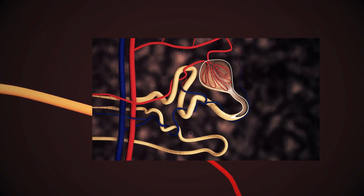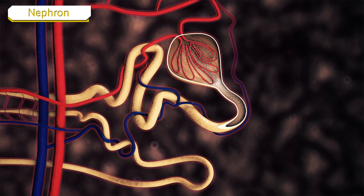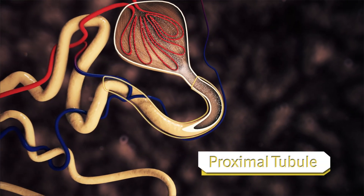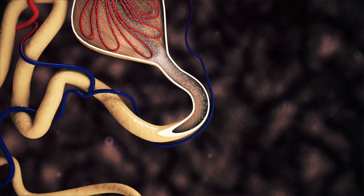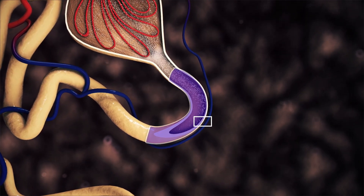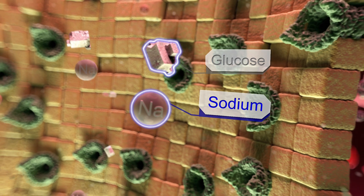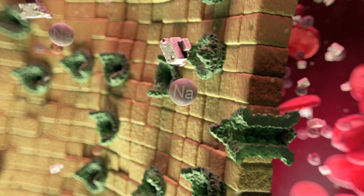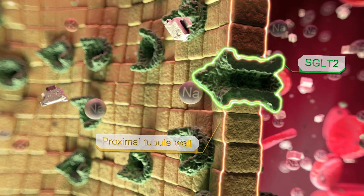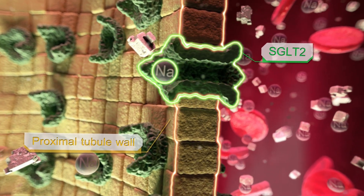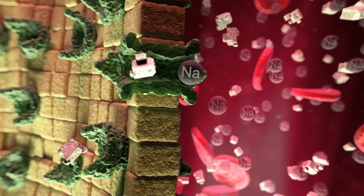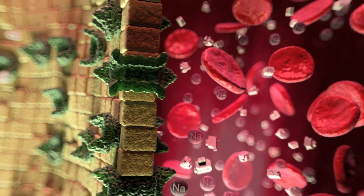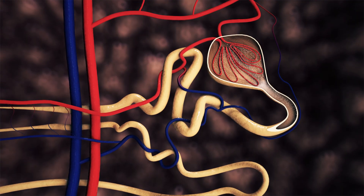The kidney contributes to glucose homeostasis through glucose filtration and reabsorption. Glucose is excreted in the glomerular filtrate, but in normal cats this glucose is reabsorbed by the kidney. In diabetic cats, more glucose is filtered than can be absorbed, and glucosuria results. Glucose reabsorption is facilitated by two sodium-glucose co-transporter SGLT membrane proteins located in the proximal convoluted tubule.